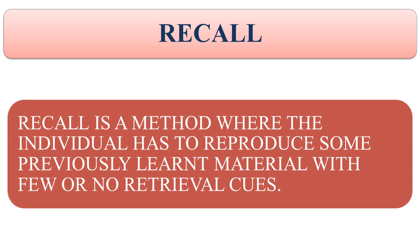Recall involves remembering a fact, event, or object that is not currently physically present and requires direct recovery of information from memory. Murdock in 1963 did an experiment to check the recall of subjects. He asked subjects to learn a list of words. Later, recall was tested by the free recall method. Murdock found that subjects could recall the first few words — primacy effect — and the last few words — recency effect — but got confused with the words in the middle. This is called the Serial Position Effect.